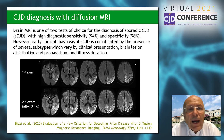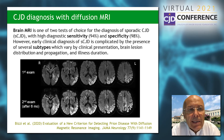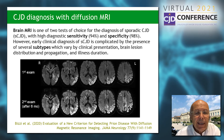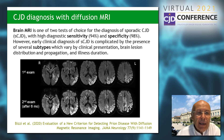Brain MRI is one of two tests of choice for the diagnosis of sporadic CJD with high diagnostic sensitivity and specificity. However, early clinical diagnosis of CJD is complicated by the presence of several subtypes, which vary by clinical presentation, histopathology, brain lesion distribution and propagation, and illness duration. In this MRI, you can appreciate the bright signal abnormality in the cortical ribbon of the occipital and parietal lobe that is so unique about CJD. In a follow-up study, you can appreciate that the lesions have extended to involve also the frontal lobe, the caudate nucleus, and the putamen on both sides of the brain — this is what we call the propagation of the illness, shown very nicely with MRI.